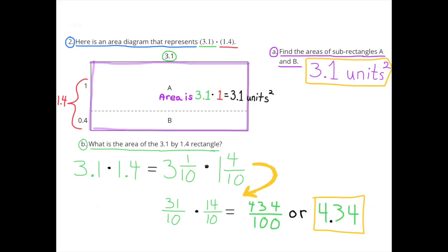Number 2. Here is an area diagram that represents 3.1 × 1.4. A. Find the areas of sub-rectangles A and B. Sub-rectangle A is 3.1 × 1, and that area is 3.1 units squared.